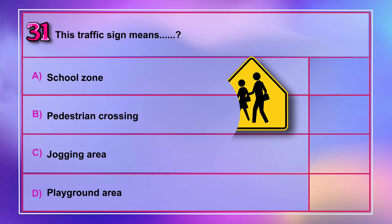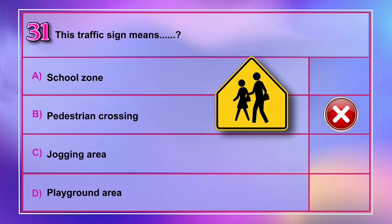Question number 31: This traffic sign means A) school zone, B) pedestrian crossing, C) jogging area, D) playground area. Correct answer is A: school zone.